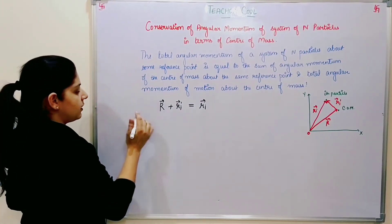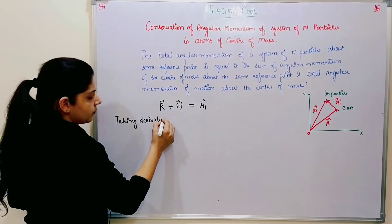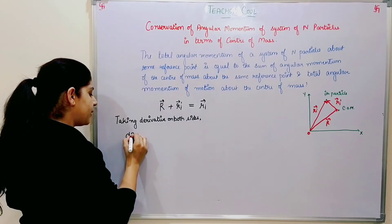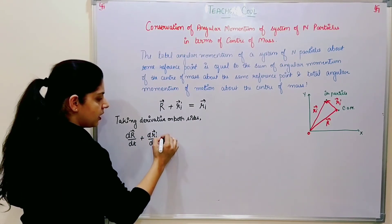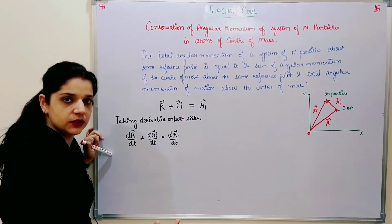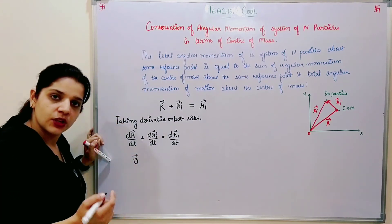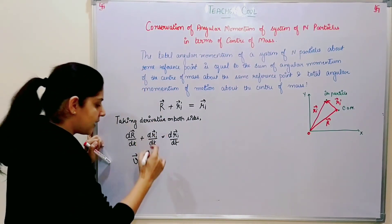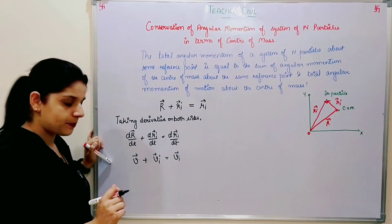Now I will take the derivative on both sides. So d(R)/dt + d(Ri')/dt = d(Ri)/dt. Since dR/dt is the derivative of the center of mass position vector, I write it as V — the velocity vector of the center of mass — plus Vi-prime, which is the velocity of the i-th particle relative to the center of mass, equals Vi, the velocity of the i-th particle.